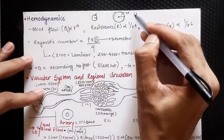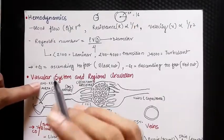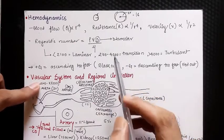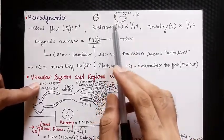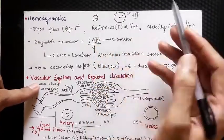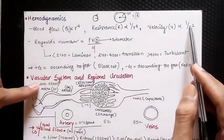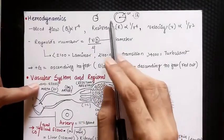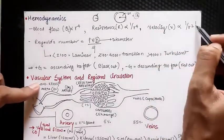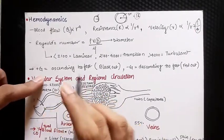Similarly, resistance is inversely proportional to the fourth power of radius — resistance will be reduced to 1/16 when the radius is doubled. Velocity is inversely proportional to the square of radius; if the radius is doubled, the velocity will be reduced to 1/4.